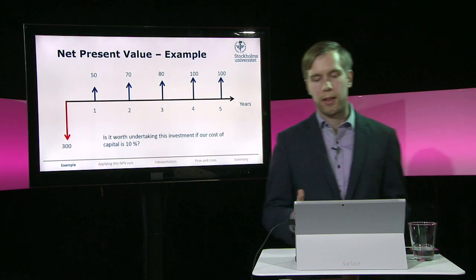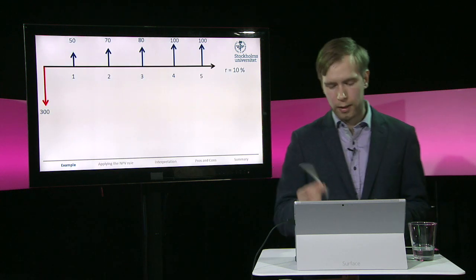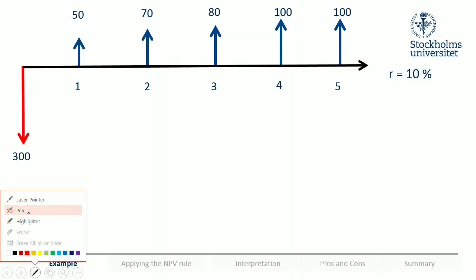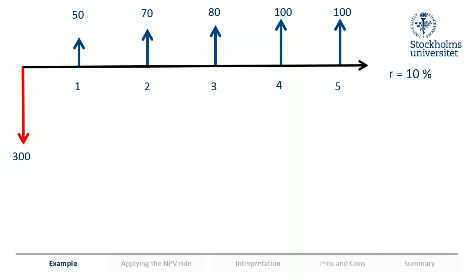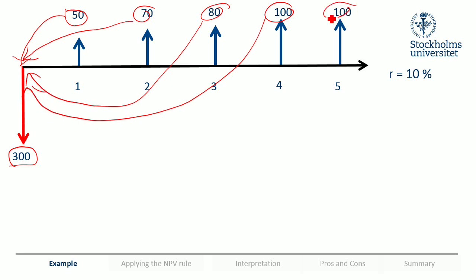Let's go back to this example. Is it worth undertaking this investment if our cost of capital is 10 percent? Remember that we always want to compare things in comparable terms and we have the time value of money, so we need to move all of these benefits back to today. After we've done that, we can compare the present value of these benefits with the cost of 300. We take them one at a time because they are not all the same every year and there's no constant growth in percentage.